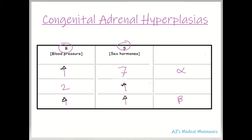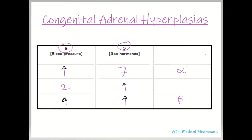That's the mnemonic. One thing to add: 21 doesn't really have a letter associated with it, while 17 gets a little alpha symbol and 11β gets a B. Since 21 doesn't get anything, maybe it got really down about it — so we'll give it CPR. That's to remind us of three other important things associated with 21-hydroxylase deficiency.